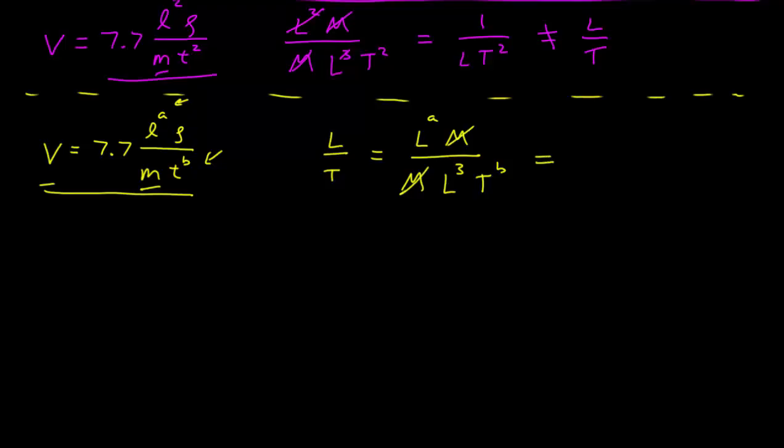So what is this? The m's cancel, and we get a length to the power a minus 3 in the numerator, and a t to the power b in the denominator. We have length times t to the negative 1, length to the 1, that's the left hand side here, and that's equal to a length to the a minus 3, t to the minus b, that's over on this side.